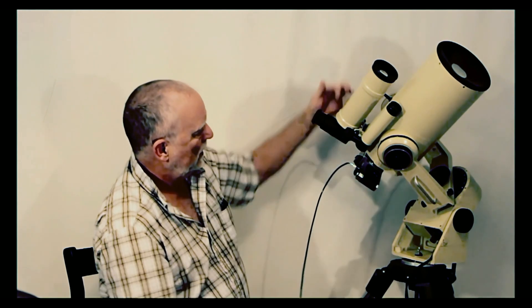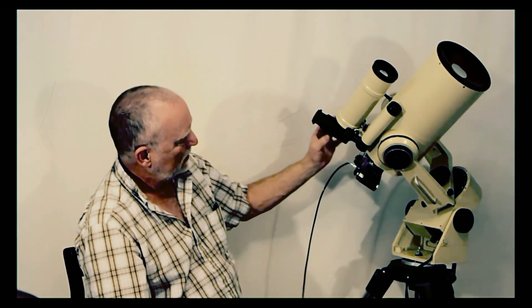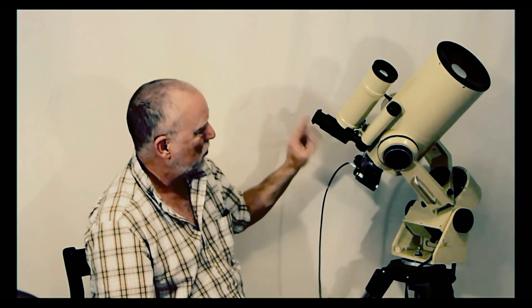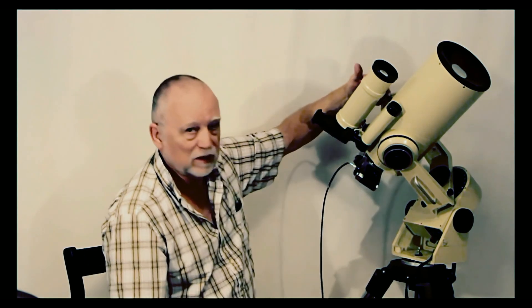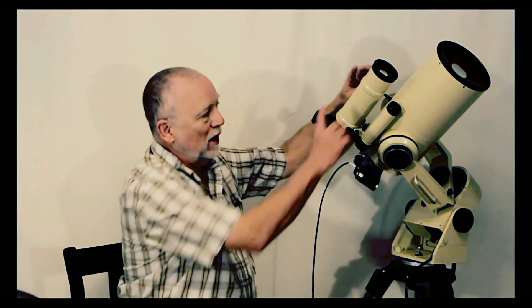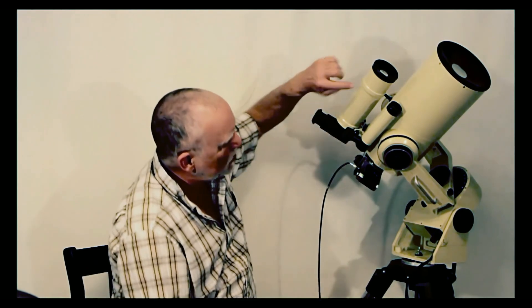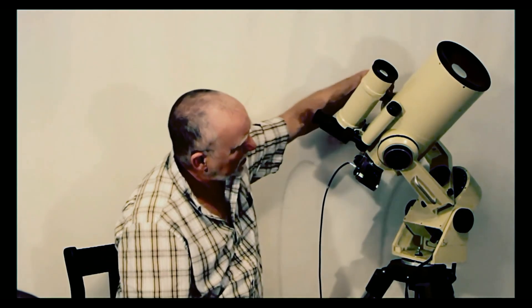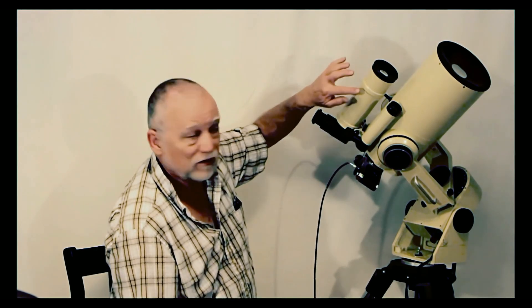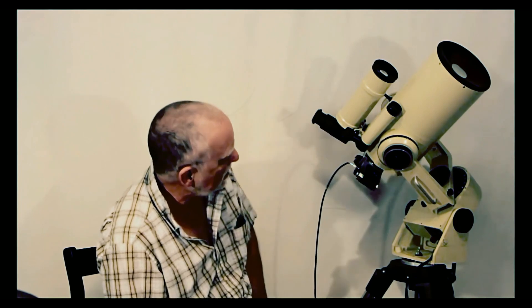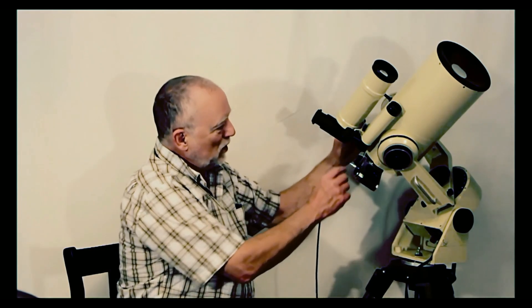The guide scope here, first of all, there's a focuser back here, a diagonal and a focuser. The guiding eyepiece would have gone here. The guide scope is mounted to the main telescope tube, not with rings, as would traditionally be done, which is a very efficient way of doing it. Instead, they have this strange little device. They have a pin here in the front which inserts into a little metal ring here. There's no way of adjusting the metal ring. It's part of the telescope tube for the guide scope.